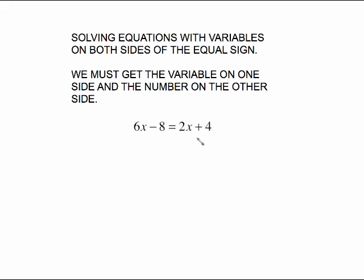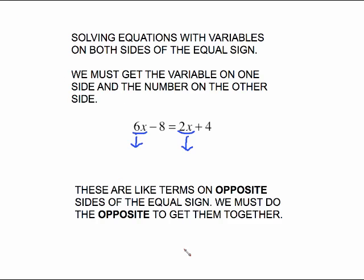Take an equation like 6x minus 8 equals 2x plus 4. The 6x and the 2x are like terms and you may be tempted to put them together, but they are like terms on opposite sides of the equal sign, which means we're going to have to do the opposite to get them together. We have to do the opposite to get them together.